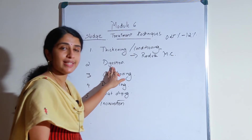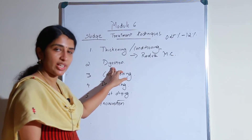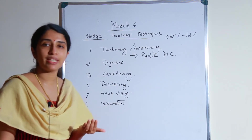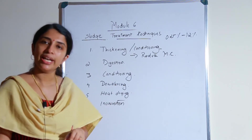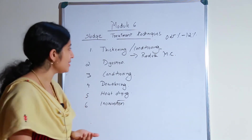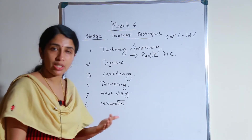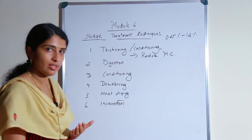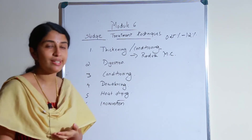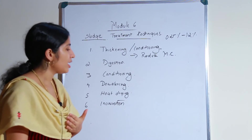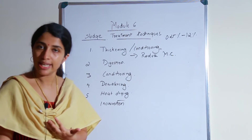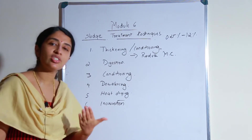The next step is sludge digestion. Sludge digestion means to decompose the organic matter present inside the sludge. It can be carried out either through an aerobic or anaerobic process. The treatment system used for digestion is called a sludge digester. Through a sludge digester we can decompose the organic matter present inside the sludge.